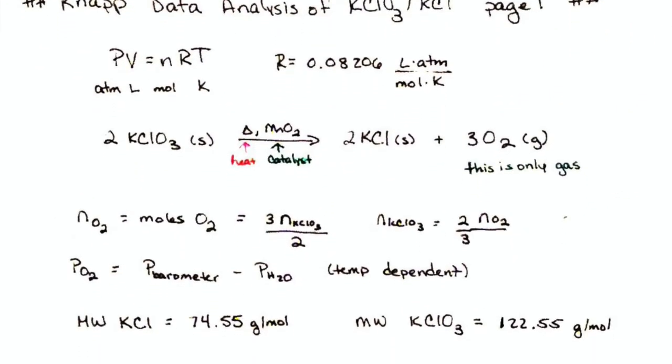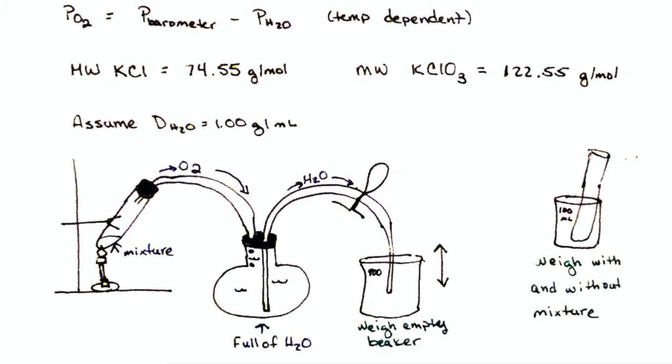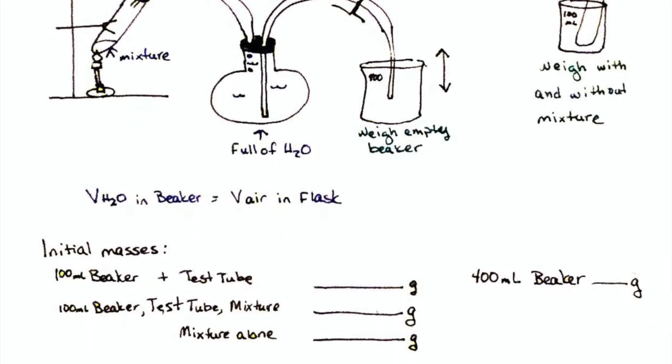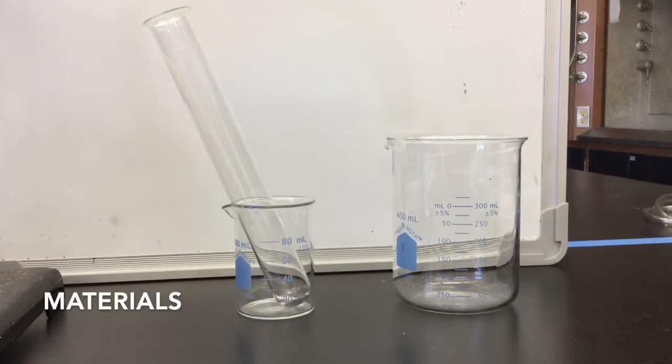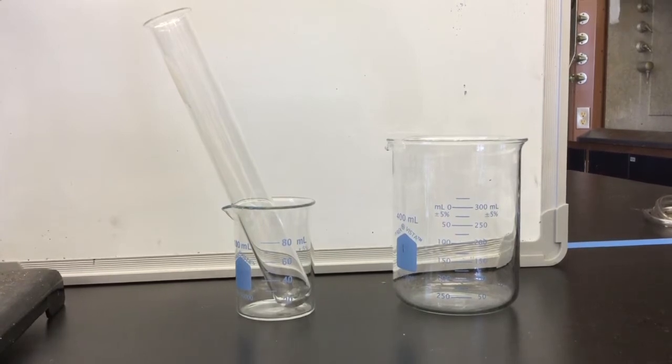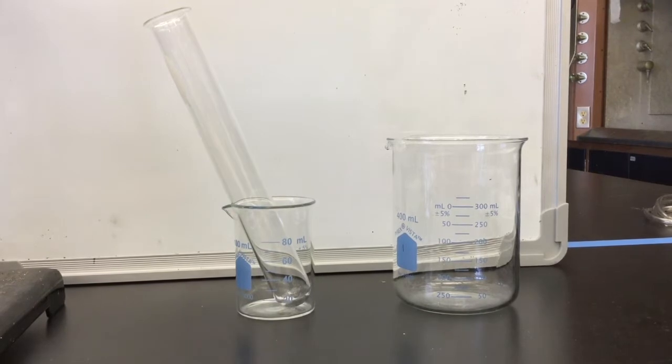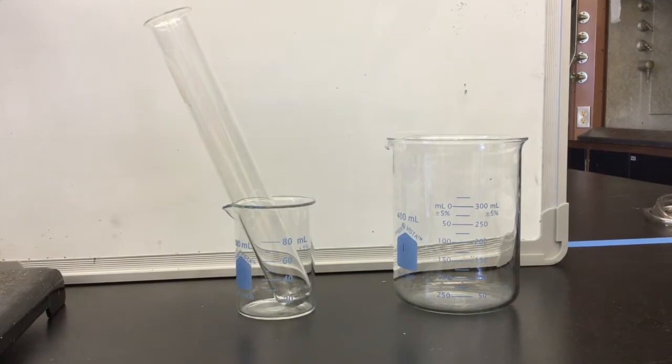Be sure to set up your lab notebook with the appropriate formulas and perhaps a drawing of the setup of the equipment and also any data tables that you will need to record your information. Most of materials for this lab will be set up for you, but you will need from your drawer two beakers. You will use a 100 milliliter beaker, not a 30 milliliter beaker as it says in the lab manual, to hold your test tube. And you will use the 400 milliliter beaker to capture the overflow water.